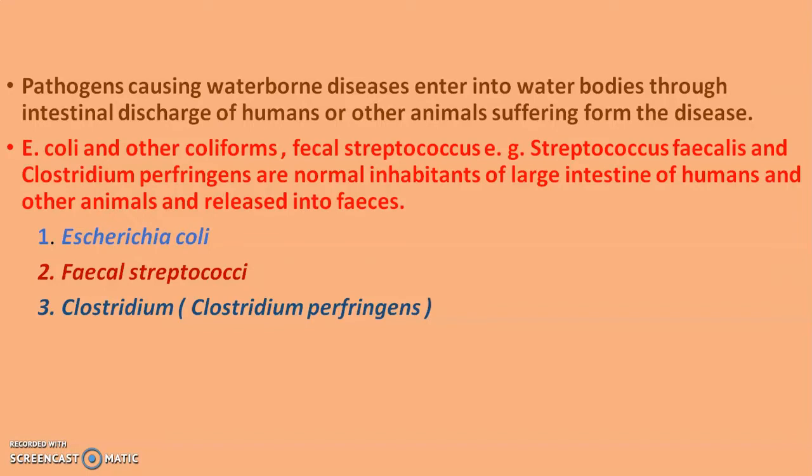Waterborne diseases are caused by pathogens that enter water bodies through the intestinal discharge of humans — that is through fecal matter — or from other animals suffering from those diseases. E. coli and other coliforms including fecal streptococcus — that is Streptococcus fecalis — and Clostridium perfringens are normal inhabitants of the large intestine of humans and other animals, and can be released into fecal matter.